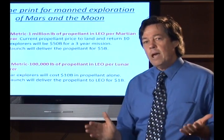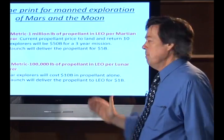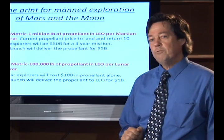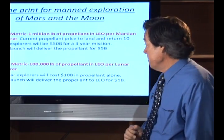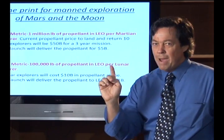For those of you who weren't watching for the last 40, 50 years, what NASA didn't tell you was that it actually takes a million pounds of propellant per explorer to go to Mars and come back safely. The metric for the moon is not a lot better. It's 100,000 pounds. These are true metrics.